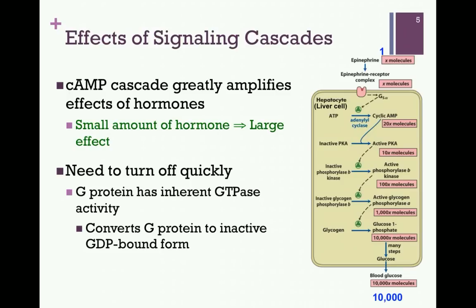What are the effects of these rather complex signaling cascades, and why are there so many steps in these pathways? Let's look at the effects of the epinephrine cascade as an example. This stimulates cyclic AMP production, and the cascade greatly amplifies the effects of these hormones, so that a small amount of hormone can have a large effect. In the figure to the right, let's take one epinephrine molecule binding to its receptor and stimulating a G-protein that produces 20 molecules of cyclic AMP. Through those cyclic AMP molecules, we'll stimulate half that number of protein kinase A, so now we have 10 molecules of active protein kinase A.